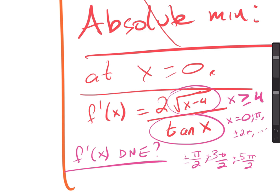When looking for absolute extrema, you typically have a closed interval, so you restrict yourself to that interval. Even for a function like sine, which has infinitely many critical points — infinitely many flat spots — you can still find the absolute maximum and minimum because it's the same value every time. Good times ahead.